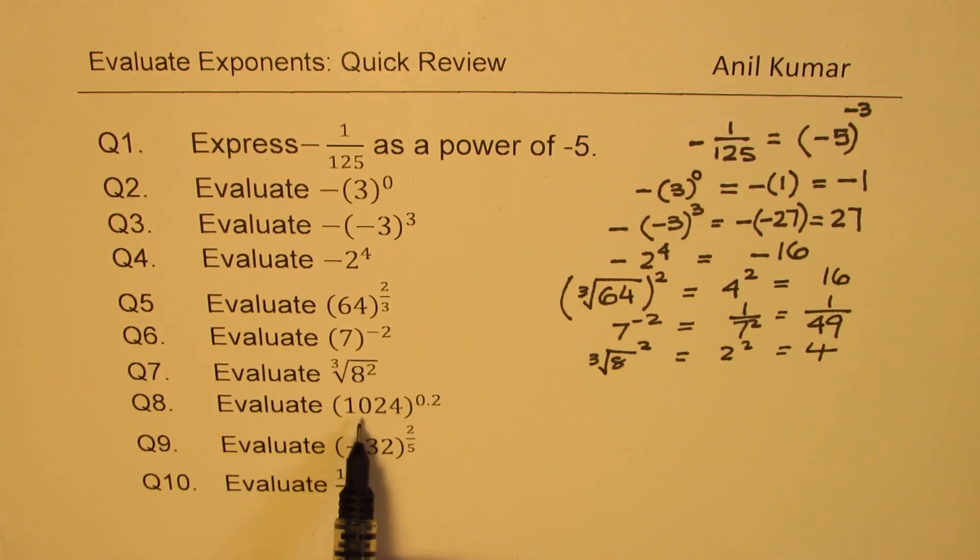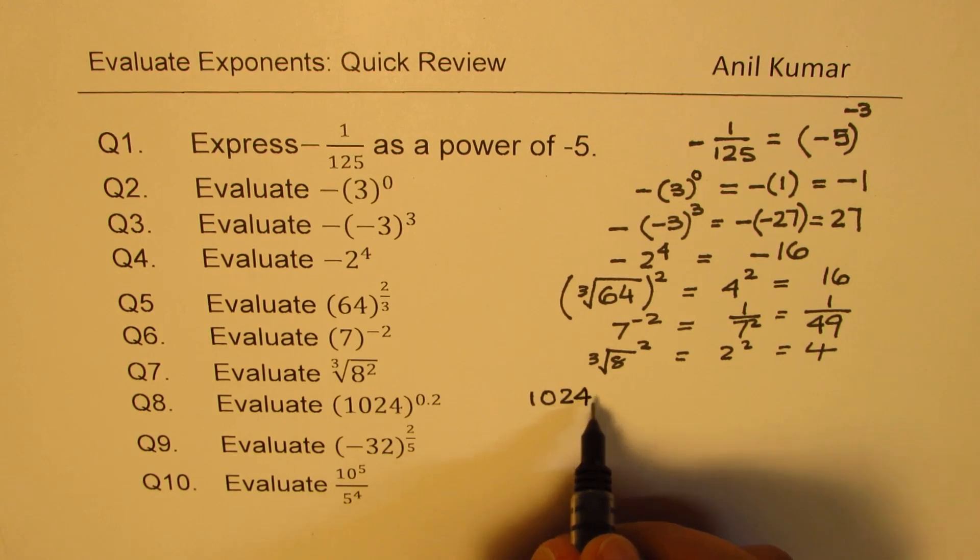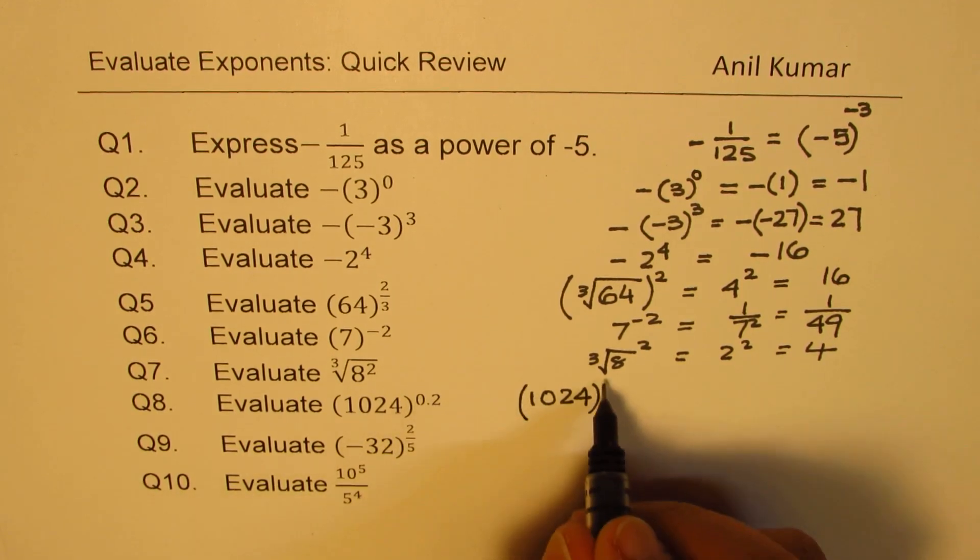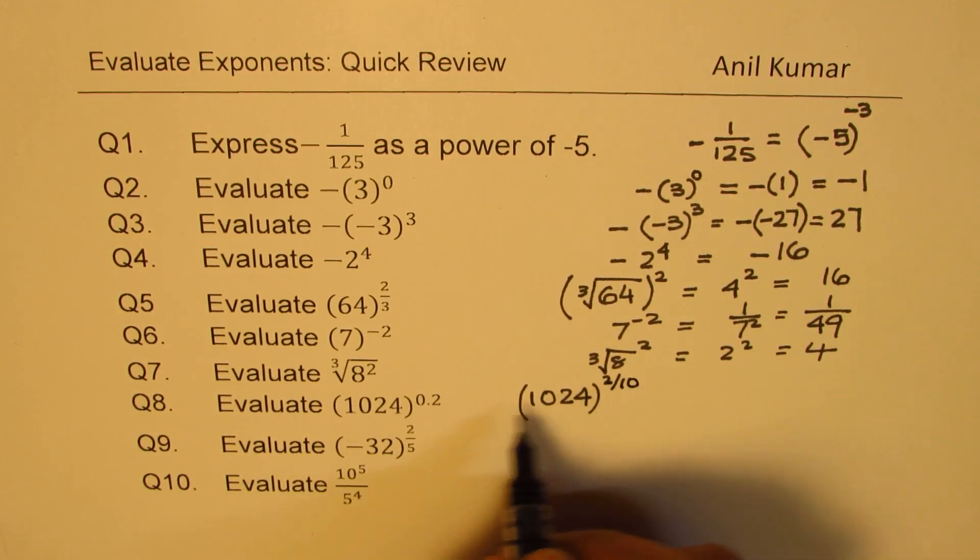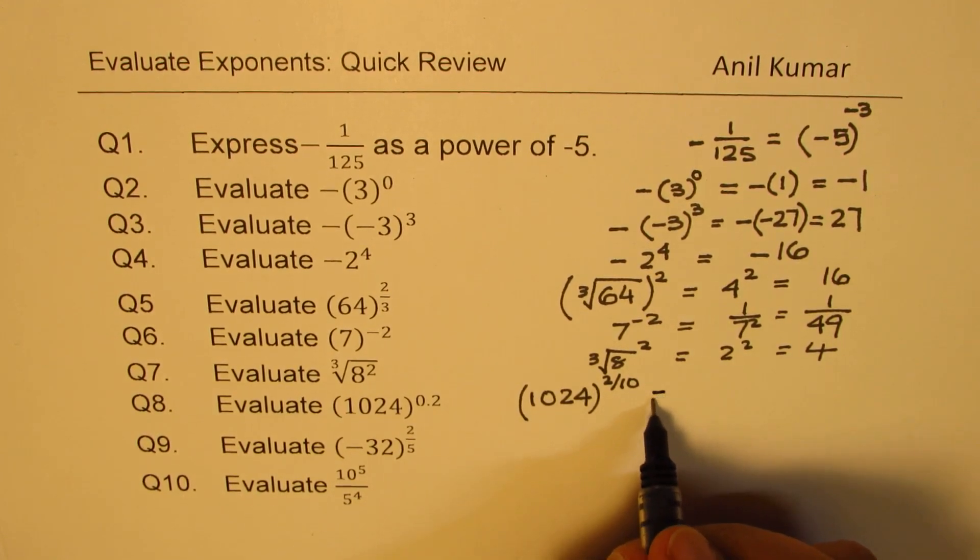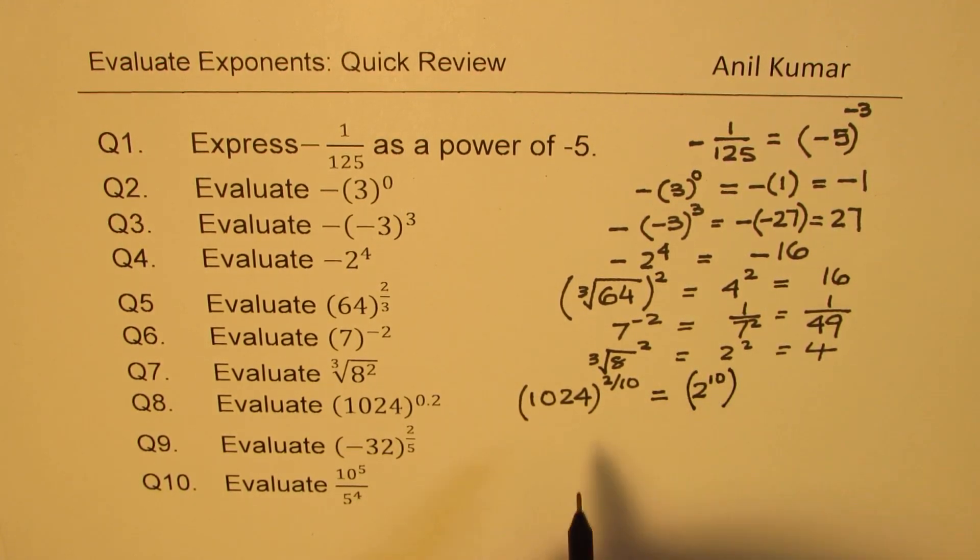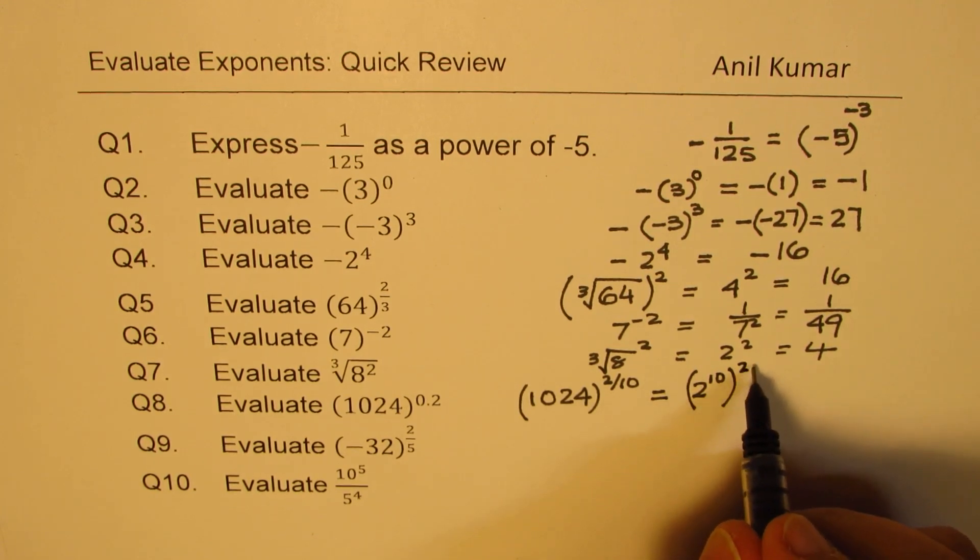Then we have to evaluate 1024 to the power of 0.2. Now 0.2 is a decimal number. It is good practice to write this as a fraction. So we could write this as 1024 to the power of 2 over 10. So 2 over 10 is 0.2.